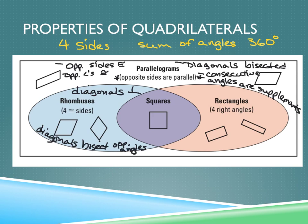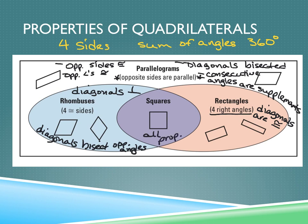For rectangles, they have all the properties of parallelograms in addition to having four right angles, and their diagonals are congruent. For the square, notice its overlap in those circles — it has all the properties of everybody: all the properties of rectangles, all the properties of rhombuses, and all the properties of parallelograms. Notice that rhombuses have four congruent sides, which is also what squares have.